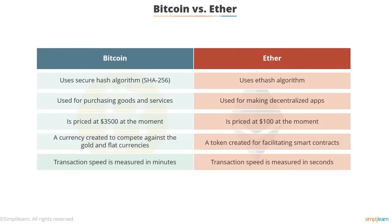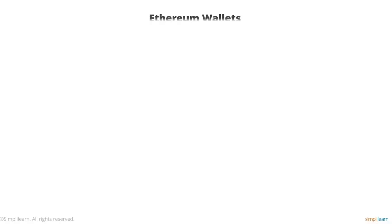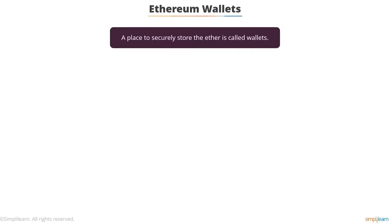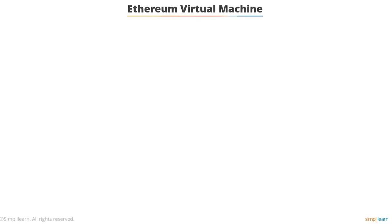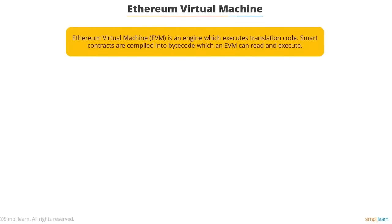Like bitcoins, Ether is also stored in cryptocurrency wallets. A wallet is the place to securely store Ether and other cryptocurrencies — it stores the means of accessing your currency using a private key. Now let's understand the Ethereum Virtual Machine (EVM). EVM is an engine which executes transaction code. Smart contracts are compiled into bytecode which the EVM can read and execute. The Ethereum Virtual Machine can be regarded as a quasi-Turing-complete machine — it possesses its own programming language known as the EVM bytecode.